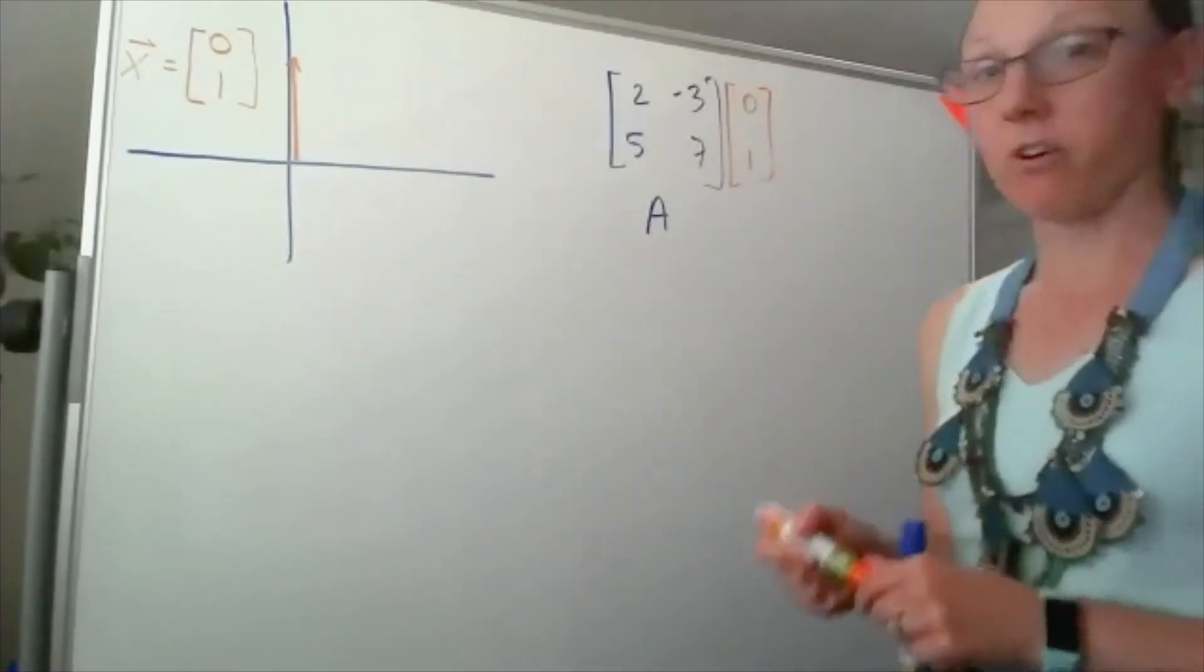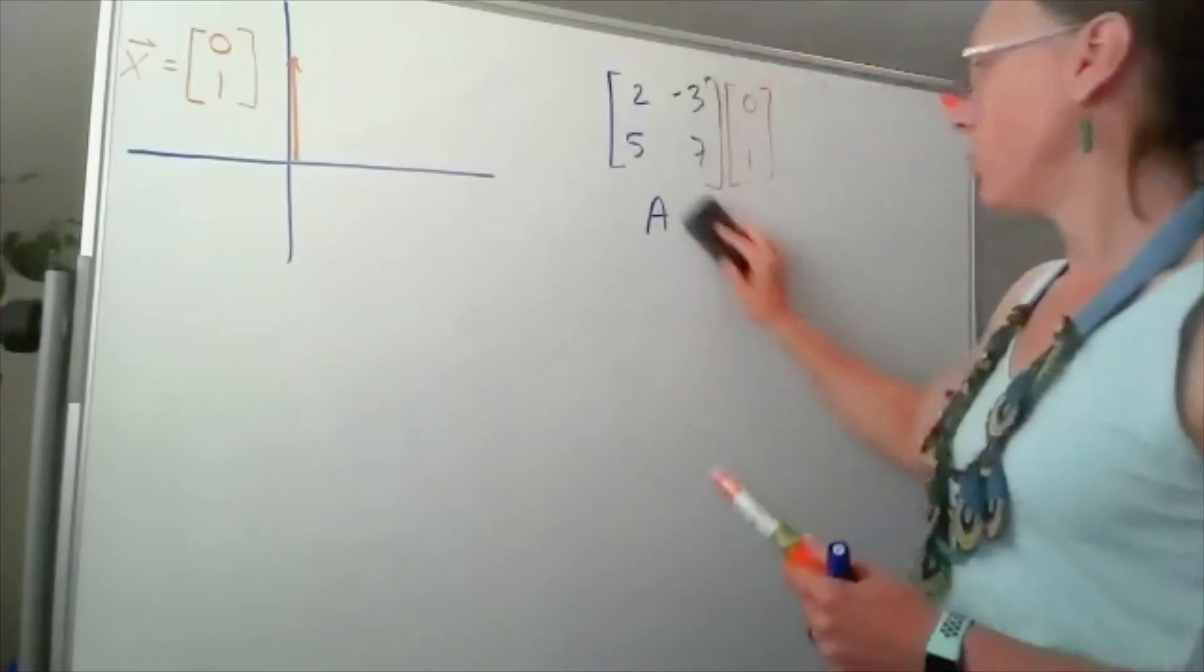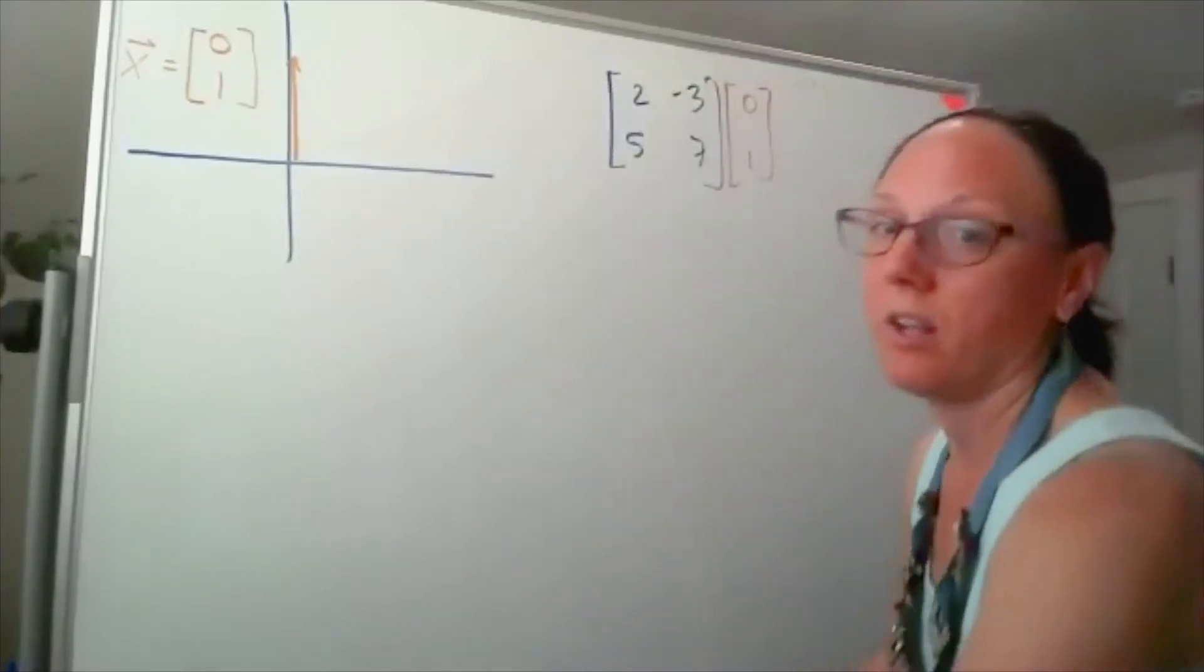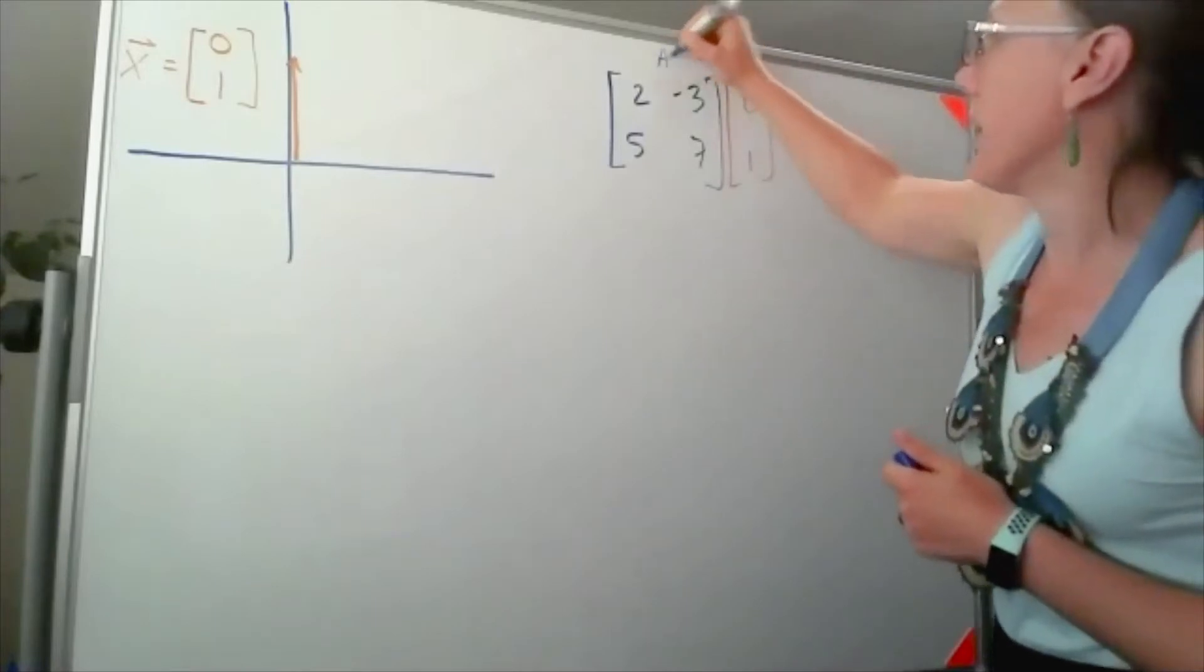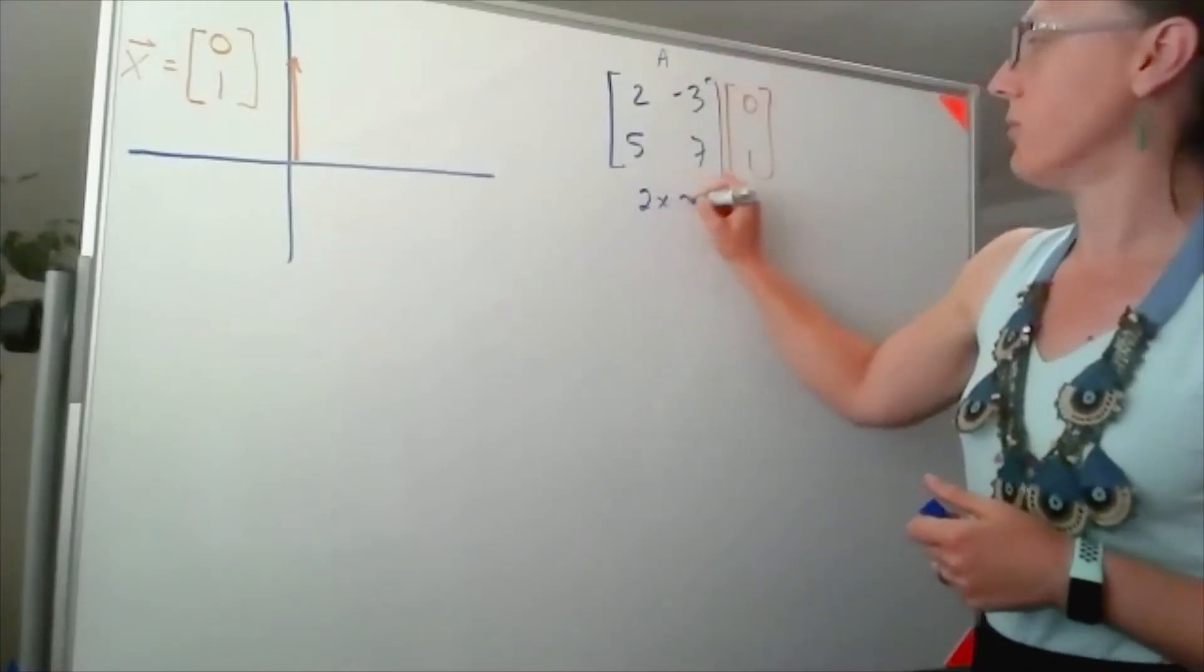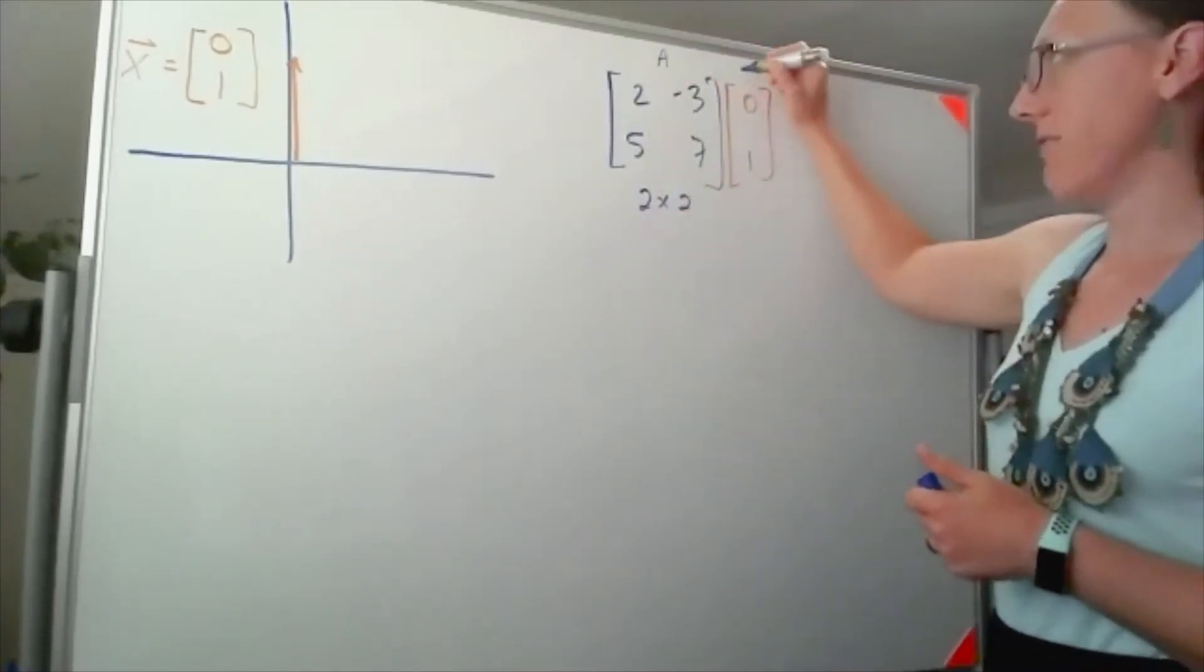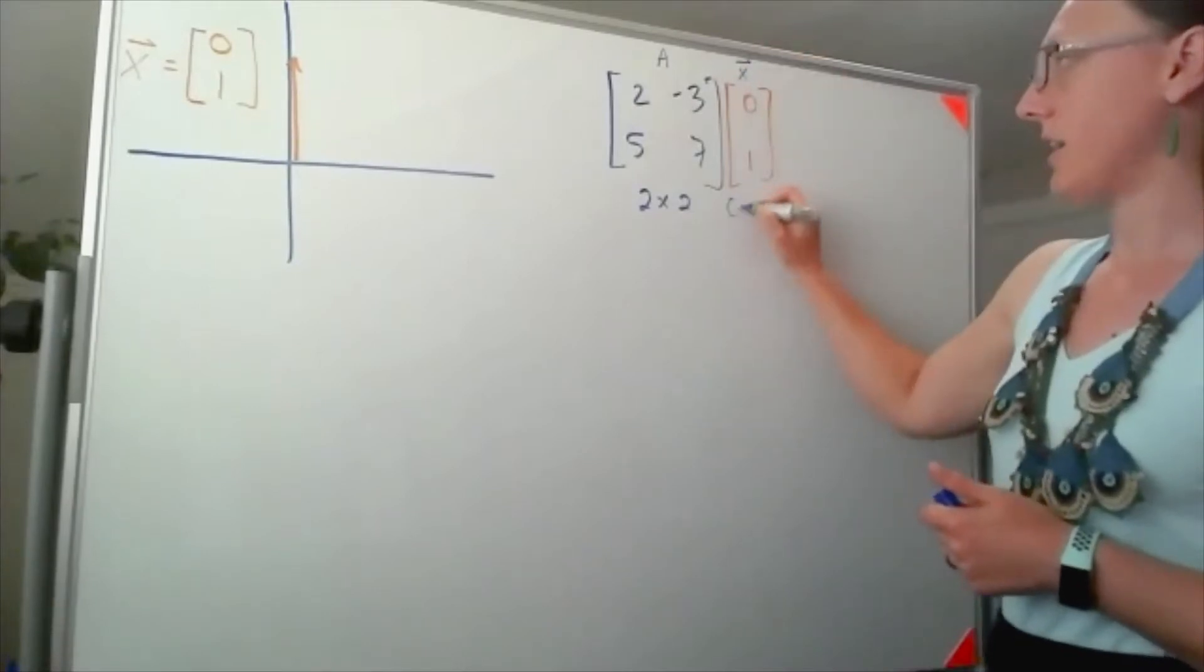First of all, if we're going to multiply these two things, we should check that the dimensions will work. So my A matrix is 2 by 2, and our x vector is 2 by 1.